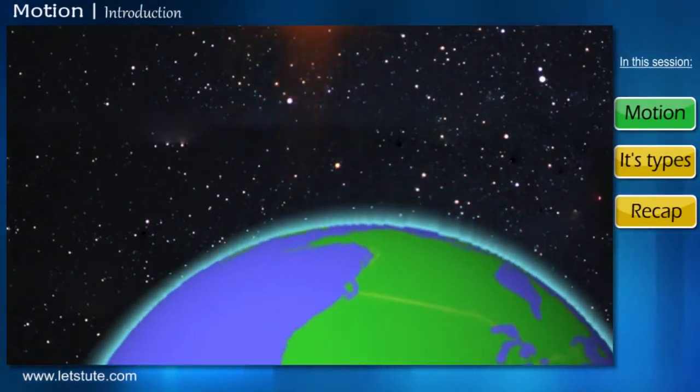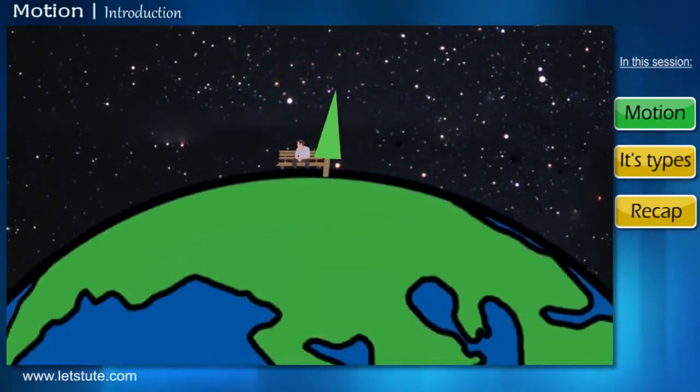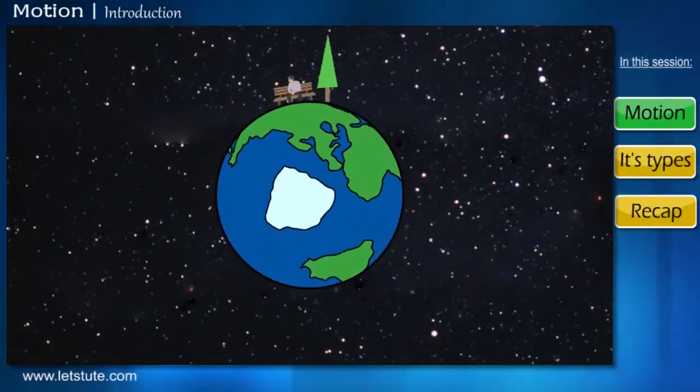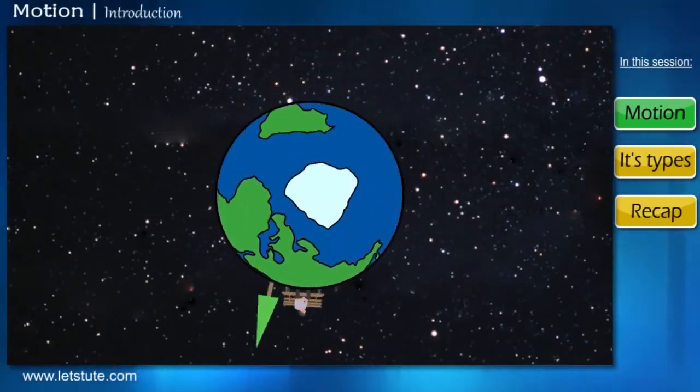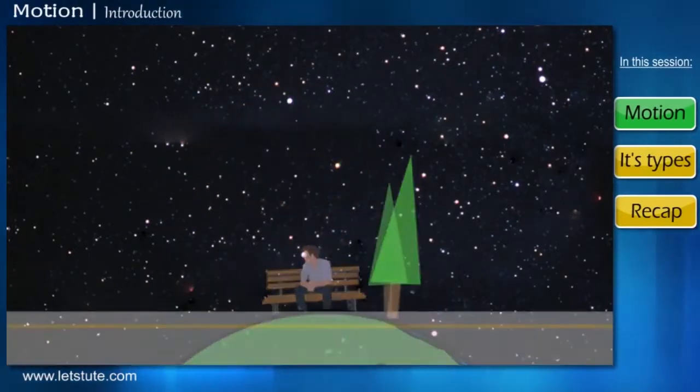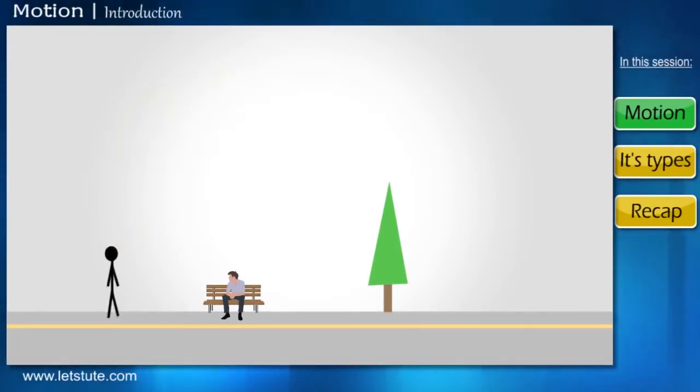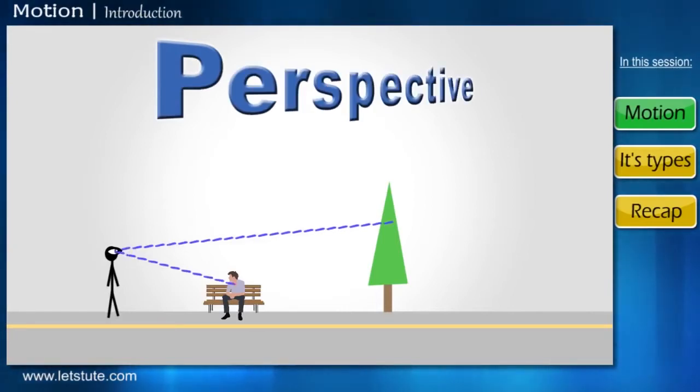And technically, if the Earth is in motion, then anything on it, including you, me, and all those stationary objects are also in motion. So even if these so-called stationary objects are moving, why do they appear stationary to us? Well, just like in life, the philosophy in physics too is the same. It's all about perspective, the way you look at things.